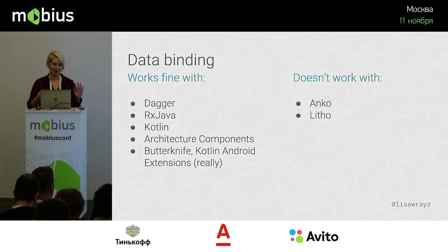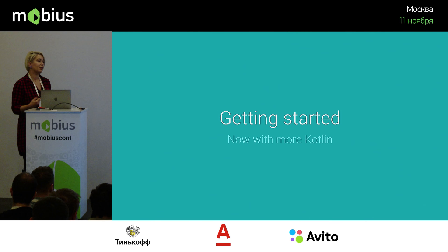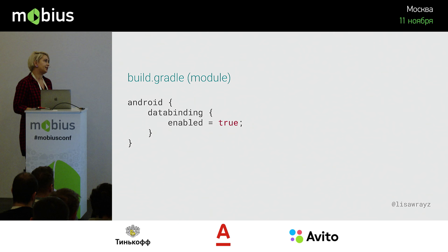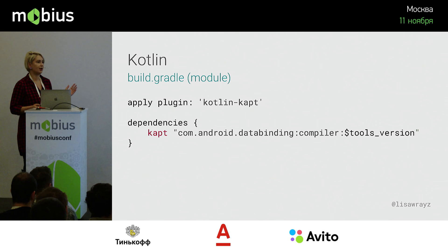First I'll give you an example of what this framework does, then we'll talk about where in your app it might be a better solution. The very first thing to do to get data binding working in your project is in your build.gradle, add `dataBinding { enabled = true }`. If you're using Kotlin, you need to apply the kapt plugin and add the data binding compiler with kapt. If you do not, you will get very weird errors and nothing will work. You must do this.